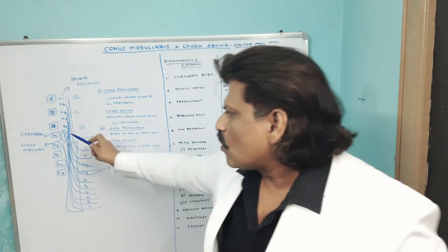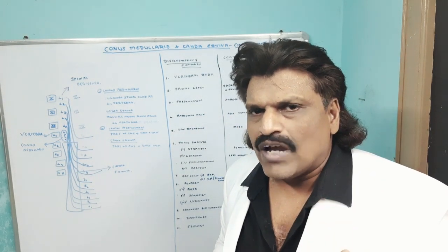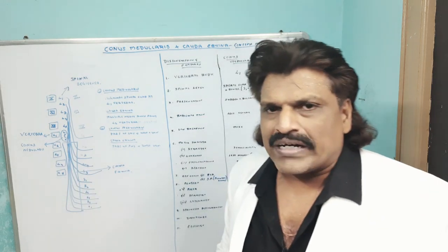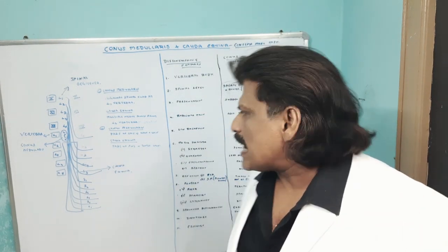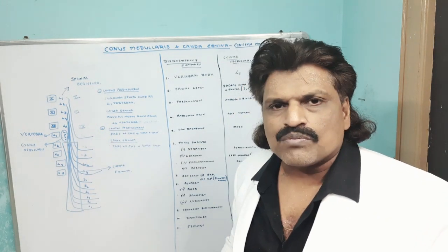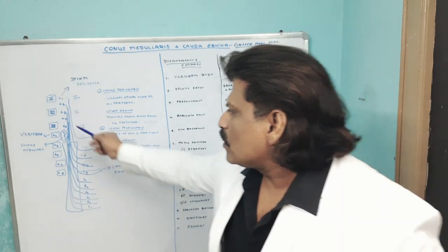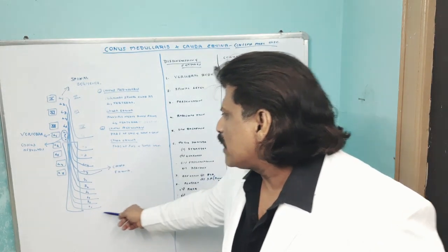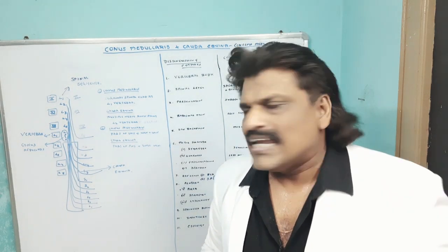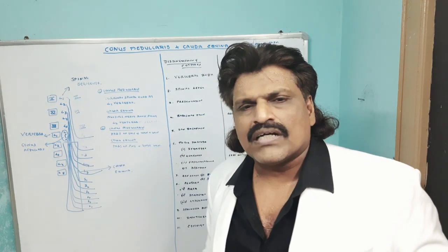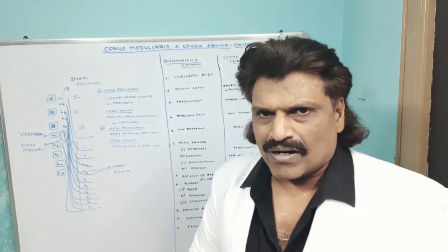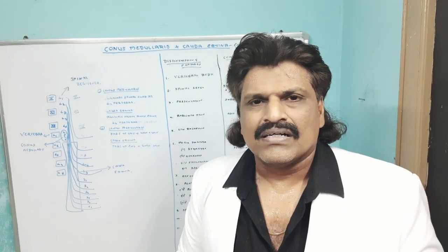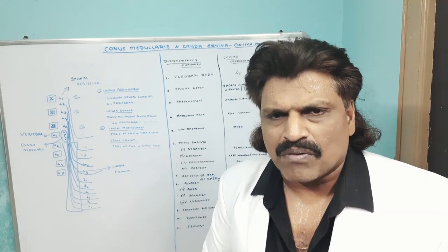So these are the important differentiating points between conus medullaris and cauda equina. To summarize: conus medullaris is the tip of the spinal cord at the level of L1, so S1 spinal segment and below. Cauda equina is at the level of L2 vertebra, so L2 spinal nerve root segments and below. Conus medullaris is part of the spinal cord — UMN signs, sometimes LMN signs — whereas cauda equina is part of the peripheral nervous system, so only LMN signs. Conus and cauda are so close together that there could be a combination of both.